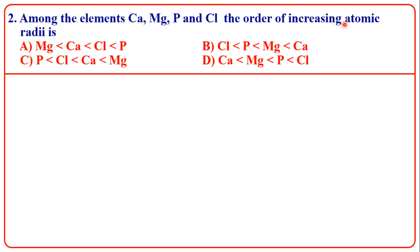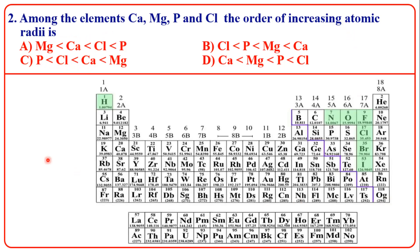From the periodic table, calcium and magnesium are in the second group. As you go down the group, atomic radius increases. So calcium is greater than magnesium; magnesium is smaller than calcium.